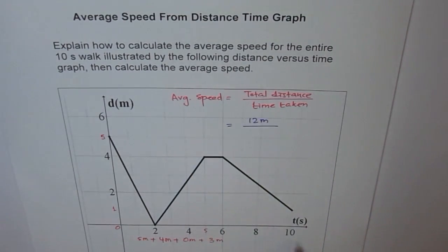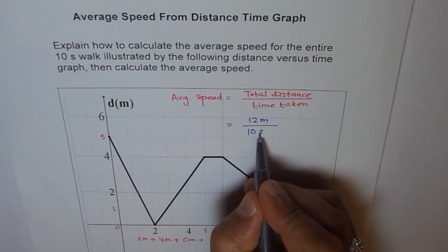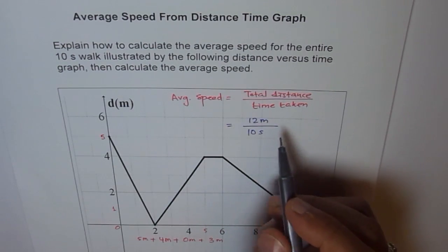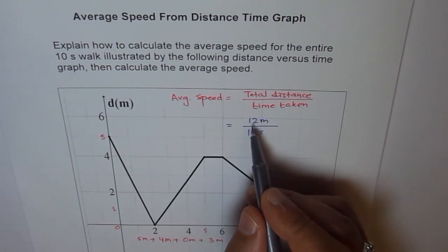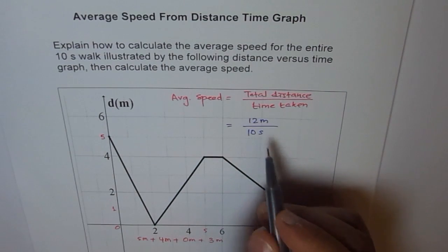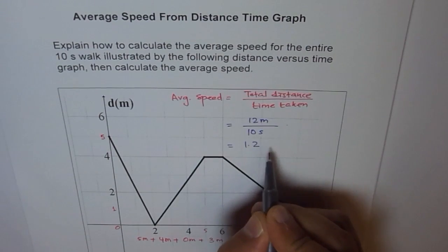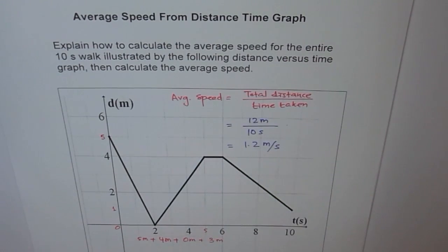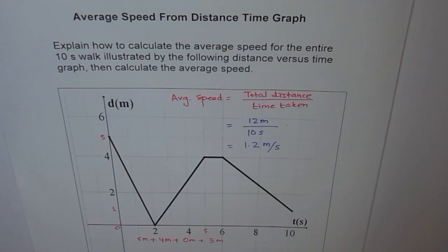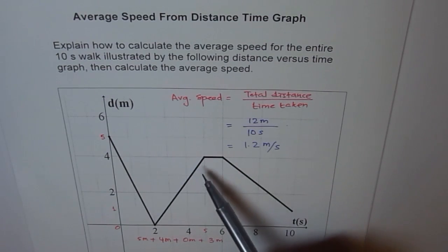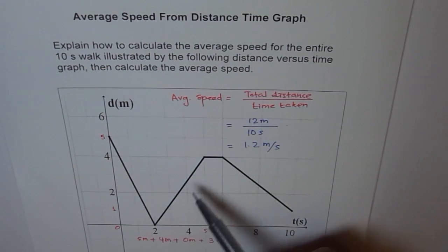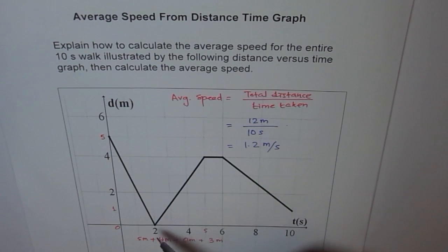The total time taken is 10 seconds, so the average speed is 12 divided by 10 meters per second, which equals 1.2 meters per second. That's the solution, but students often make the mistake of calculating the hypotenuse and spending a lot of time getting a wrong answer.